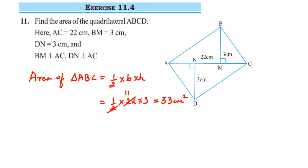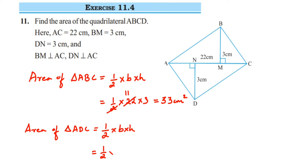Similarly, we have to find the area of the lower triangle ADC. Area of triangle ADC is equal to half into base into height. Base is AC = 22 and height is DN = 3. Cancel 2 and 22 to get 11. So 11 into 3 is 33 — we get 33 cm².